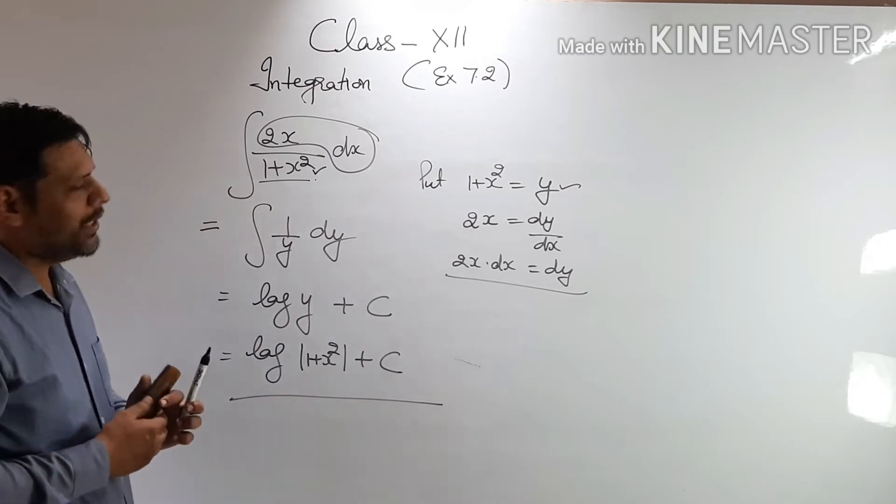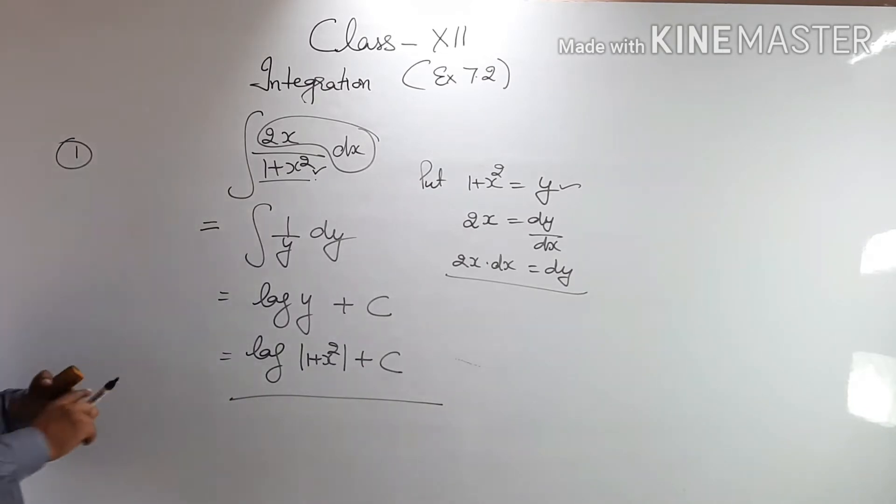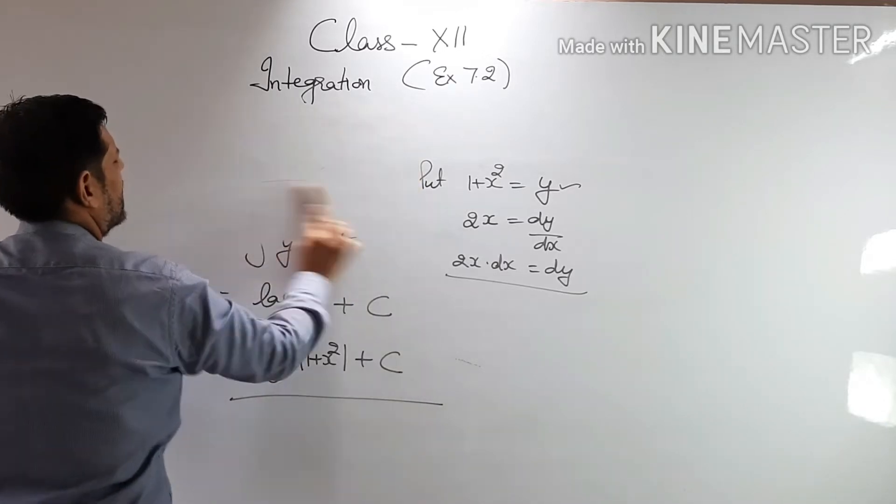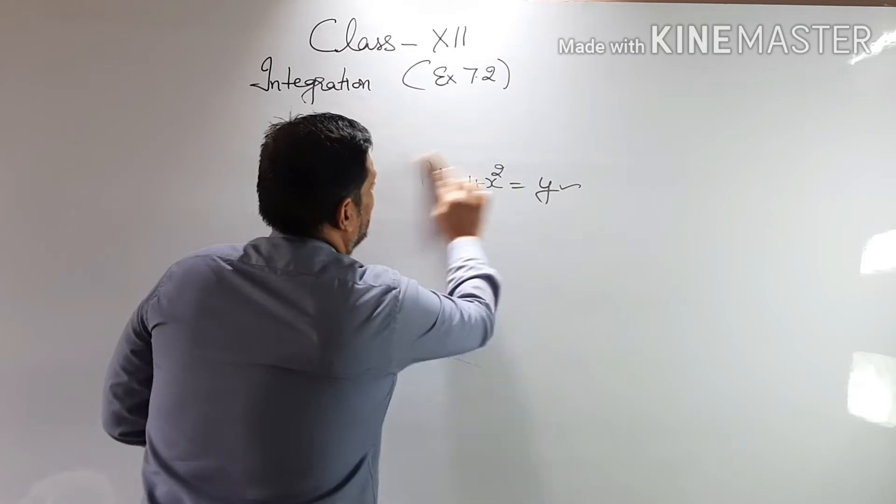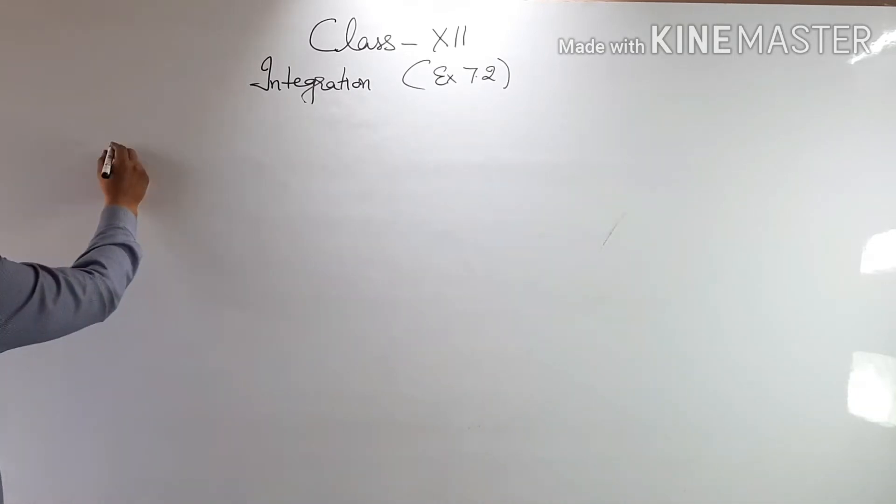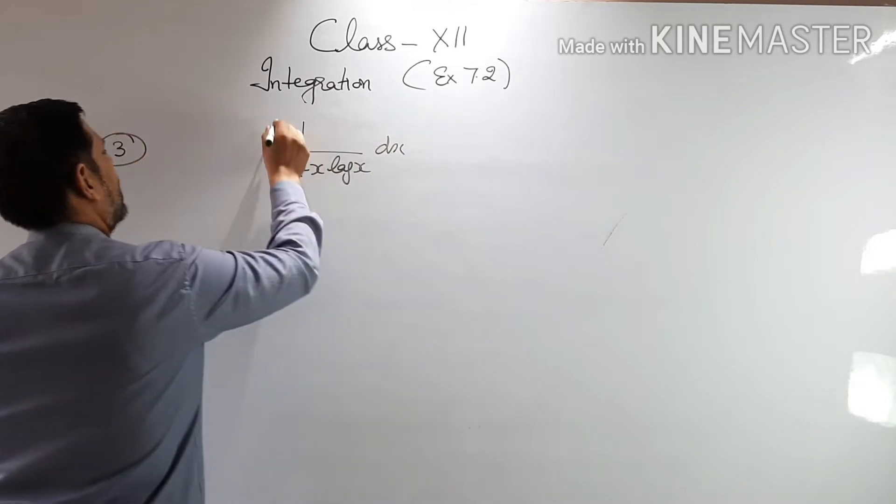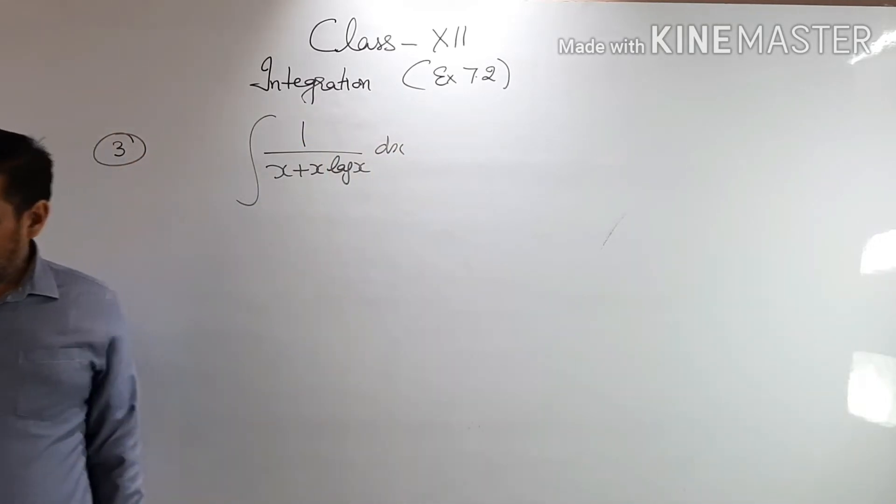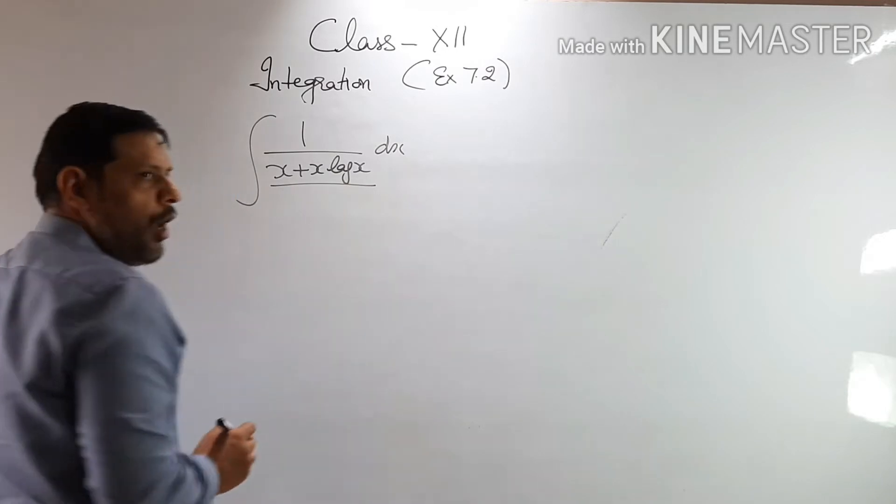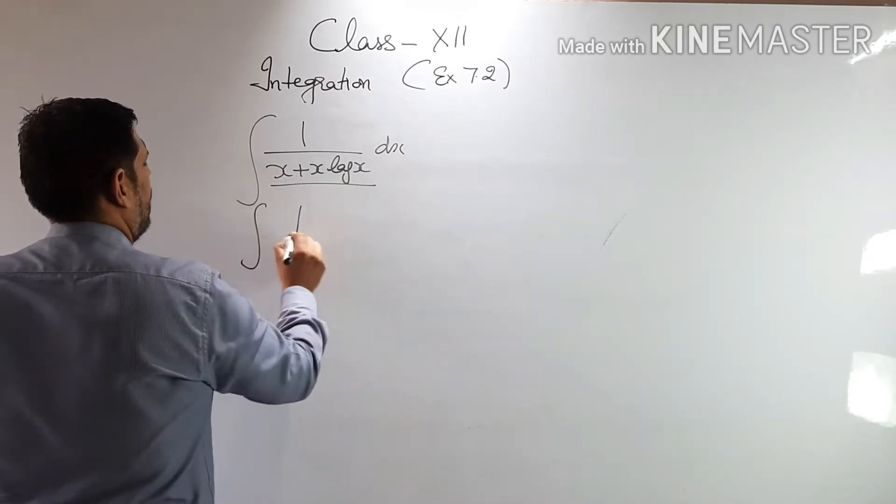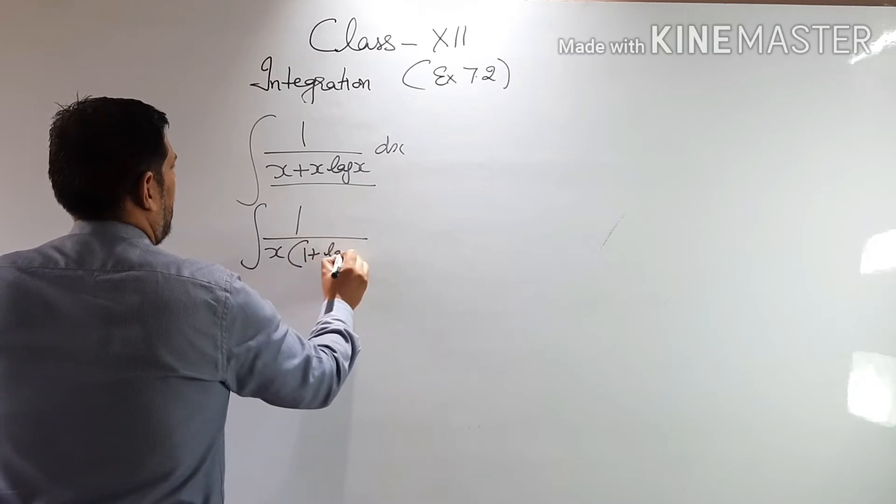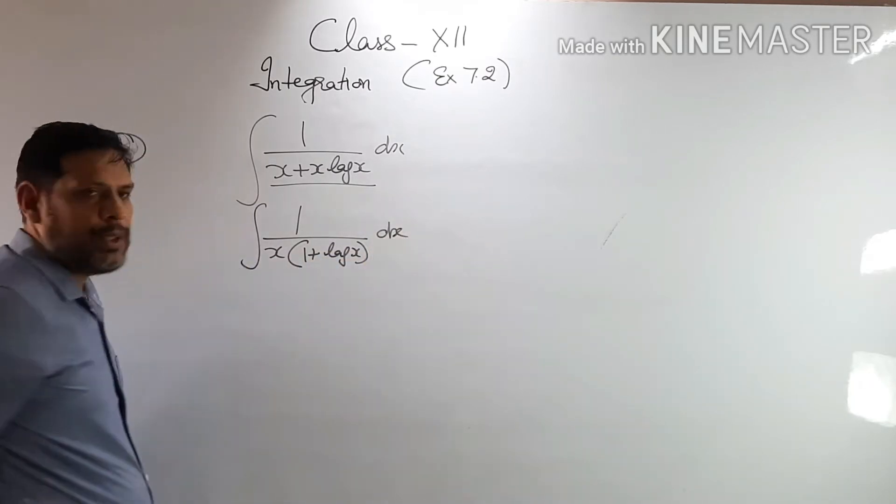But this is not your answer. You have to put the y value back where you started. So this will be log of 1 plus x square plus c. This is your answer. Now let's have a few more examples. Question number 3. The question says one over x plus x log x dx.